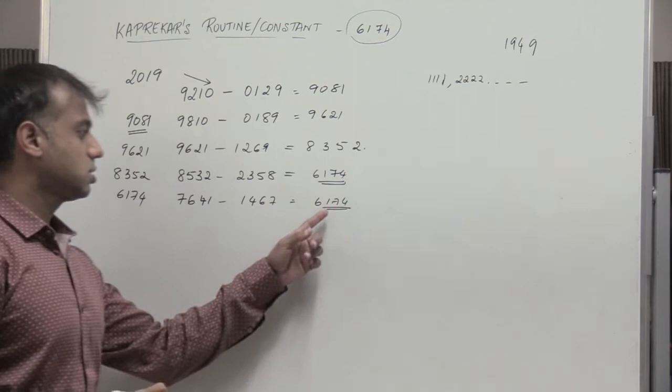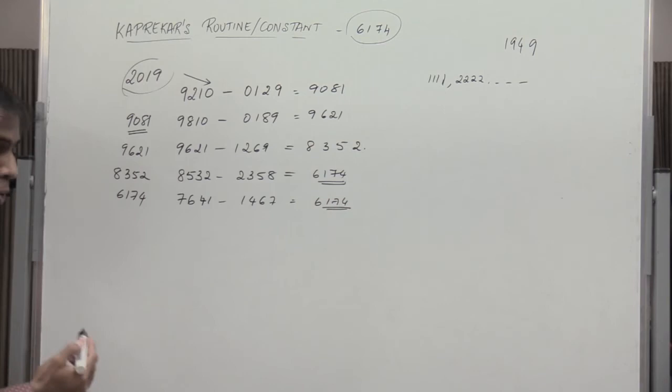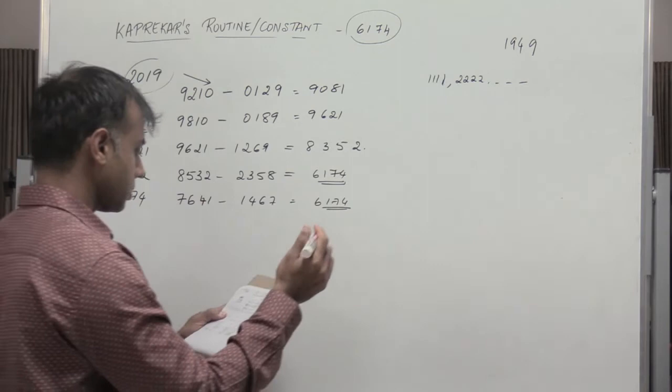So this number remains a constant. Is it true only for 2019? No. We can take any four-digit number. So let me take another four-digit number. So let me consider 1978.